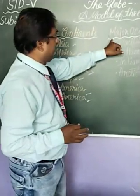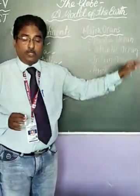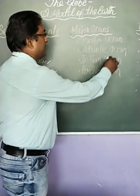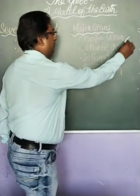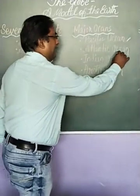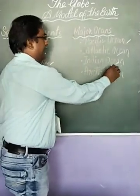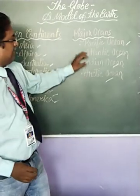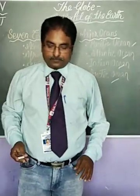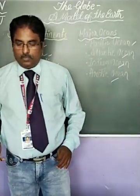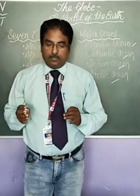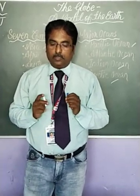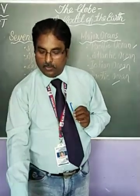Now let's see the major oceans. The major oceans are the Pacific Ocean, Atlantic Ocean, Indian Ocean and Arctic Ocean. The water around Antarctica is also called the Southern Ocean.